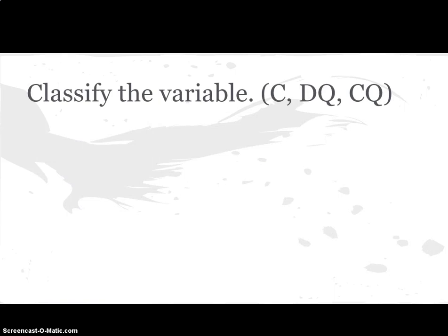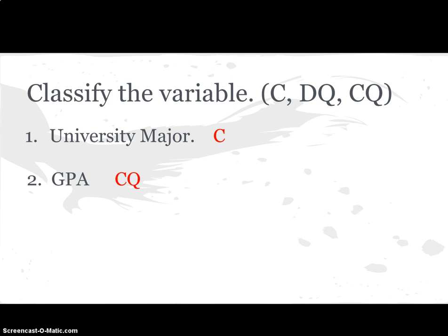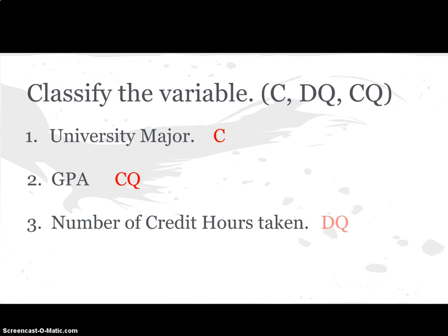Let's see if you can classify these variables. University major — that is categorical. How about GPA? That's continuous quantitative, because GPA could be any number. What about number of credit hours taken? This is discrete quantitative because credit hours only have integer values — you can't take 1.125 credit hours. Lastly, what about telephone number? It's numerical, but it's actually categorical data. Even though a telephone number is a number, it holds no value — it can only be categorized. A telephone number, social security number — those are categorical variables.